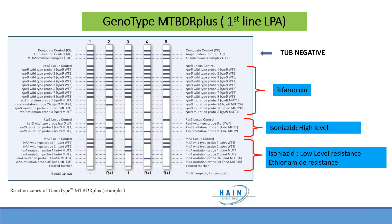The Genotype MTBDRplus first-line LPA gives you results for rifampicin, KatG, and INHA. Rifampicin has 8 wild-type probes and 4 mutant probes. KatG has 1 wild-type and 2 mutation probes. INHA has 2 wild-type and 4 mutation probes. This gives information on rifampicin resistance, INH high-level resistance, INH low-level resistance, and ethionamide resistance. The basic principle is that absence of any wild-type hybridization or presence of any mutant band indicates resistance.